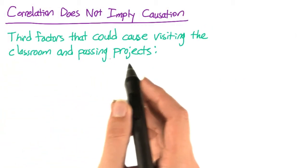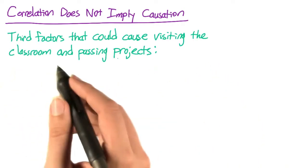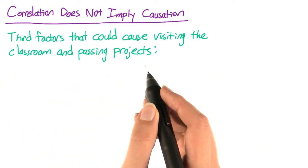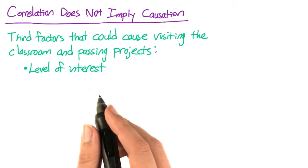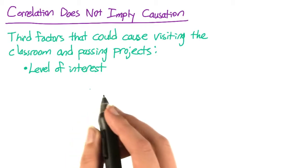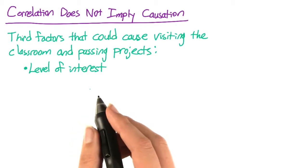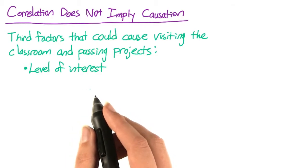What are some third factors that could be causing the correlation between visiting the classroom and passing projects? One that I thought of is level of interest. Maybe people who don't find the data analysis courses very interesting don't visit the site many times, and then they also don't pass the project because they're not interested in working on it.